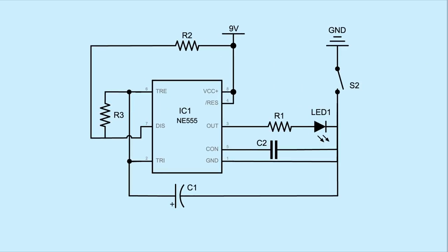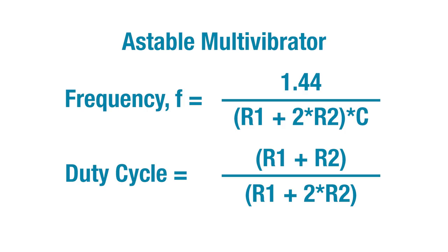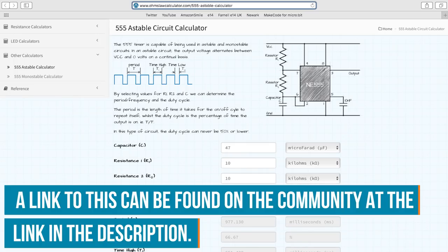Here's a schematic of a basic astable circuit. We can adjust the values of this resistor and this capacitor to make the lights blink faster or slower. There's an equation for calculating duration and duty cycle based on the values of the components. You can also find calculators online that will do the math for you. But today, we're just going to experiment.